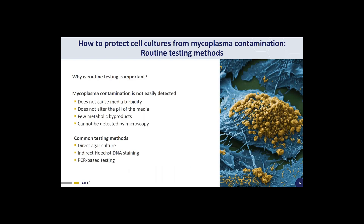Why is routine testing important? Mycoplasma contamination is not easily detected — it does not cause media turbidity, it does not alter the pH of the media, it produces few metabolic byproducts, and it cannot be easily detected by microscopy. For this reason, three common testing methods are recommended: the direct agar culture, the indirect Hoechst DNA stain, and the PCR-based test. Let's look at each one of these tests in more detail.